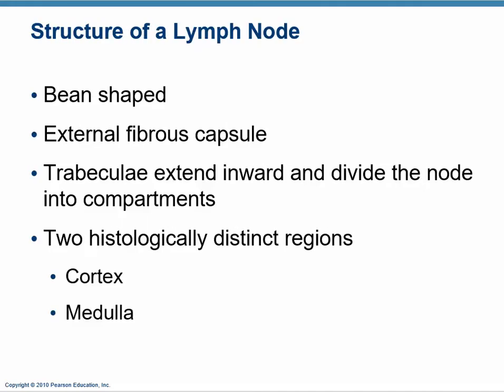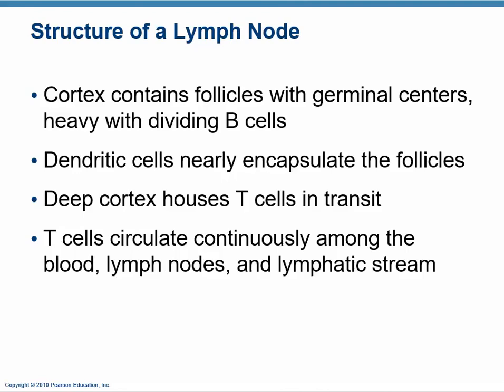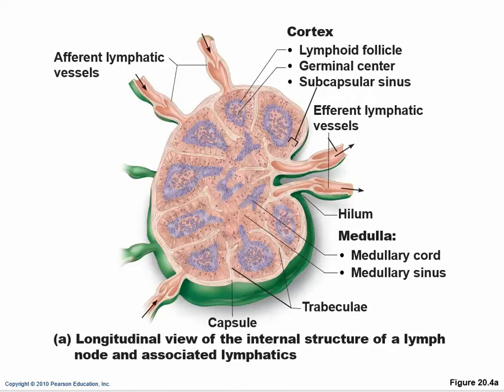Lymph nodes look like a bean. They have a fibrous capsule and walls inside called trabeculae. They're divided into a cortex and a medulla — a center and an outside. In the cortex we have lots of follicles with lots of reticular tissue, and this is where the B lymphocytes are. T lymphocytes are also found in there.